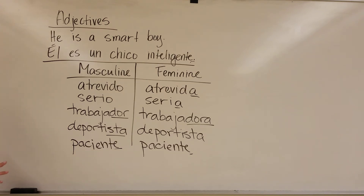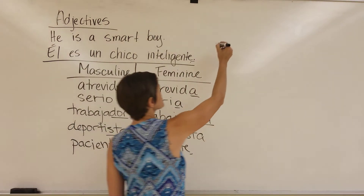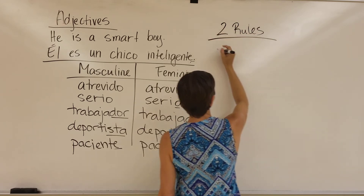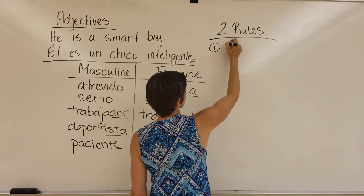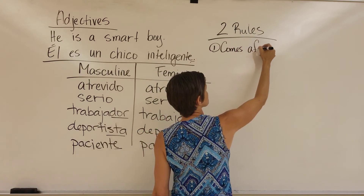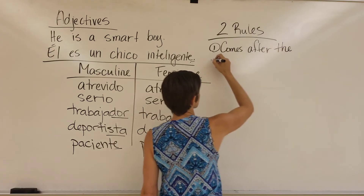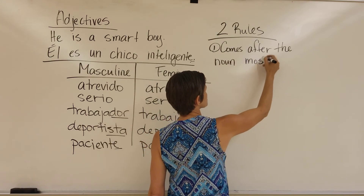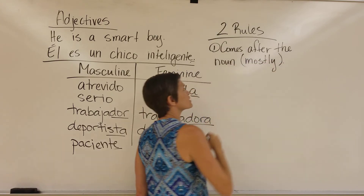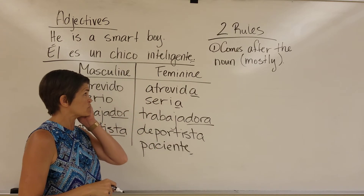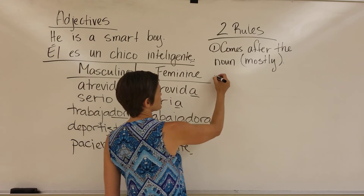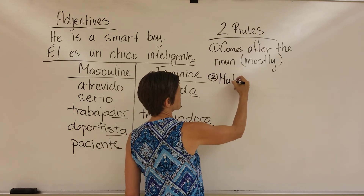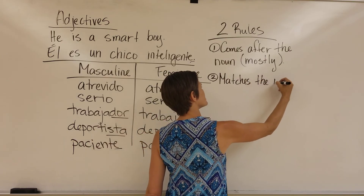We need to make sure adjectives match up, so we've got two rules. One: the adjective comes after the noun it describes — mostly, since there are some cases where it comes before, but generally it comes after instead of in front. Two: it matches the noun that it's describing. And that's how we work with adjectives in Spanish.